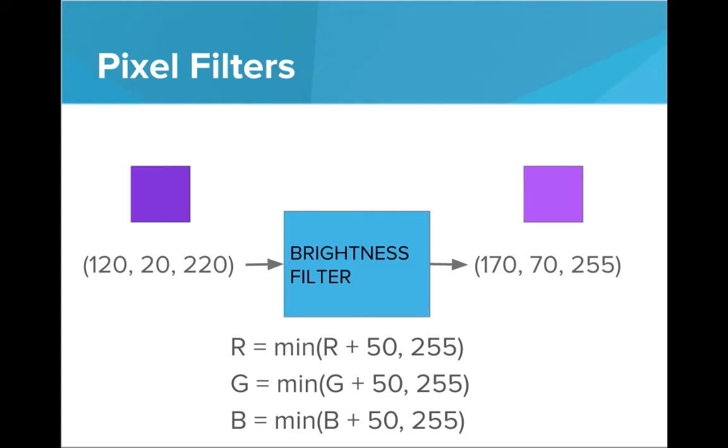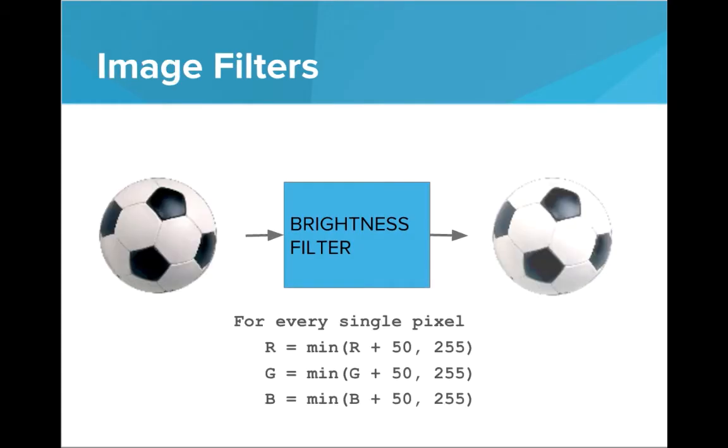So that's how we can brighten a pixel. And what if we want to do that for an entire image? If we want to apply a brightness filter to an image, we just do this process for every single pixel. We will loop over all pixels in the image and apply the brightness filter to each pixel. Set the R to R plus 50, G to G plus 50, and B to B plus 50, of course capping at 255.